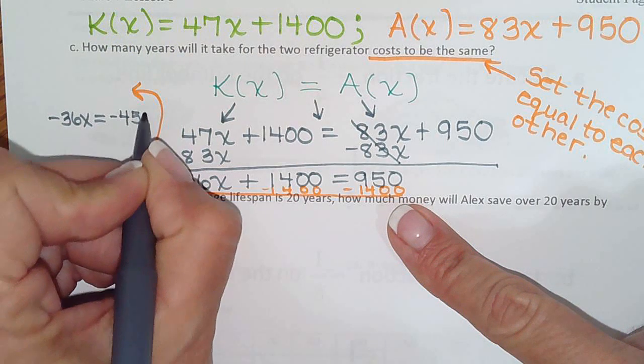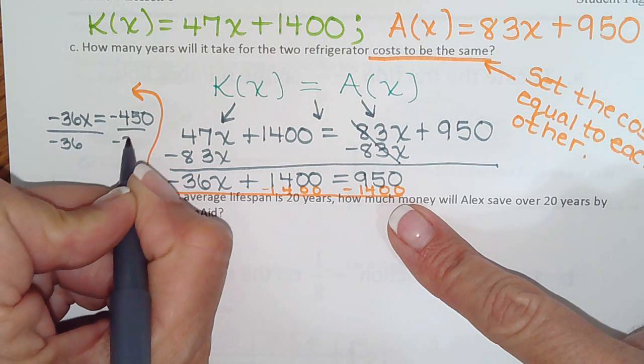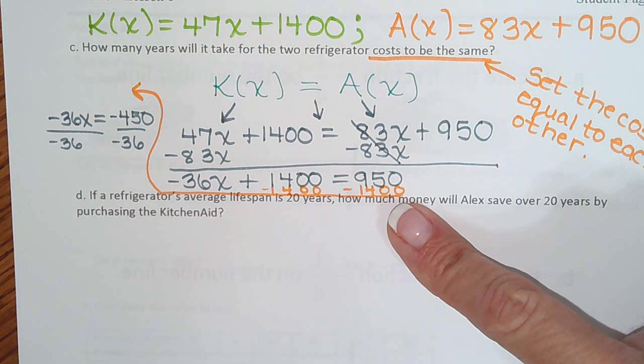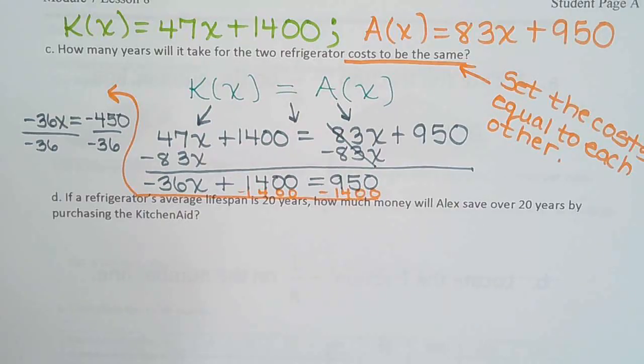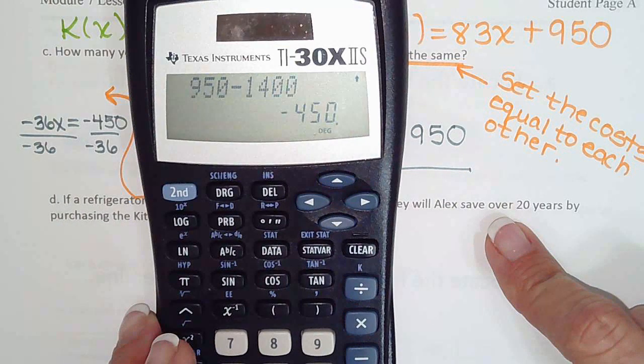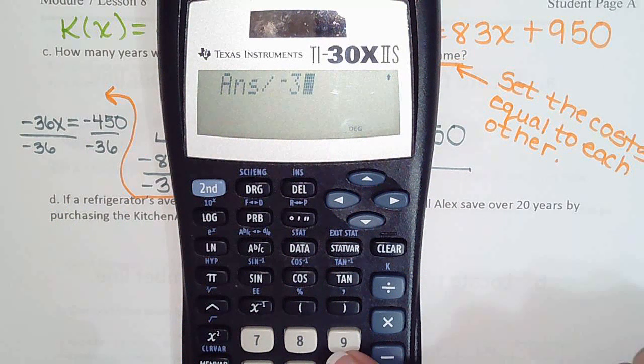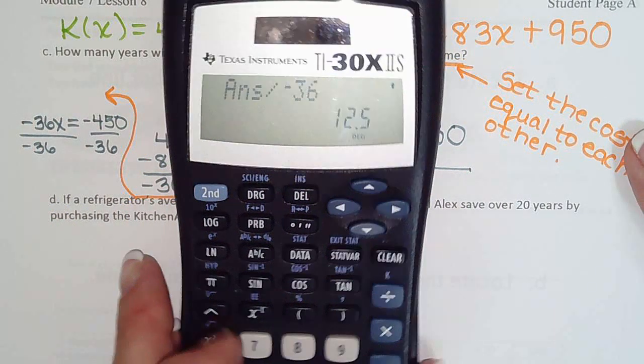And then divide both sides by negative 36, because that's the opposite of multiplying by negative 36. And with negative 450 still in the calculator, we can just type in divided by negative 36, and we get 12.5.